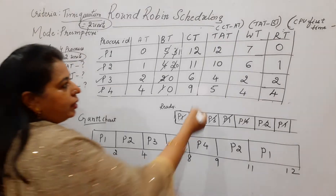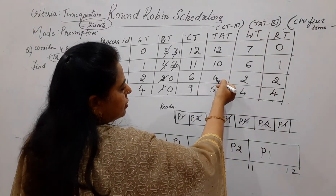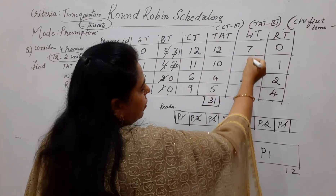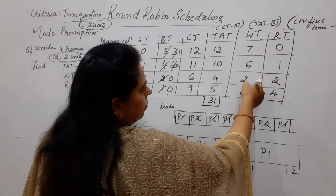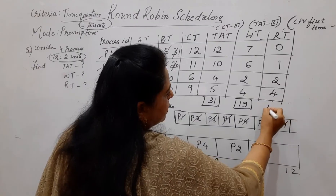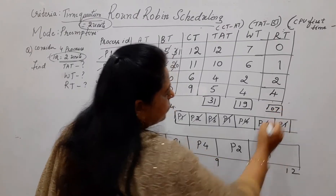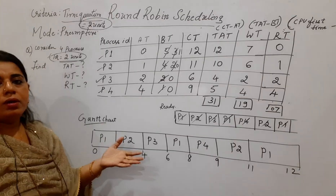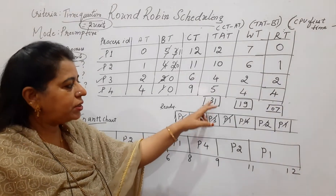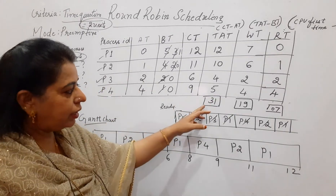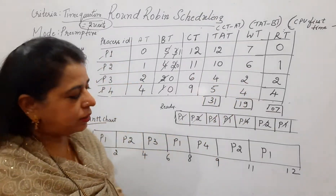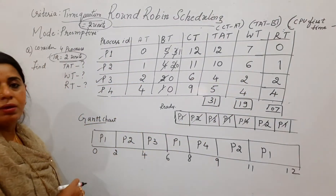Find the totals and averages: total turnaround time = 31, total waiting time = 19, total response time = 7. If asked for averages, divide by the total number of processes (4): average turnaround = 31/4, average waiting = 19/4, average response = 7/4. This is how you carry out the round robin numerical.